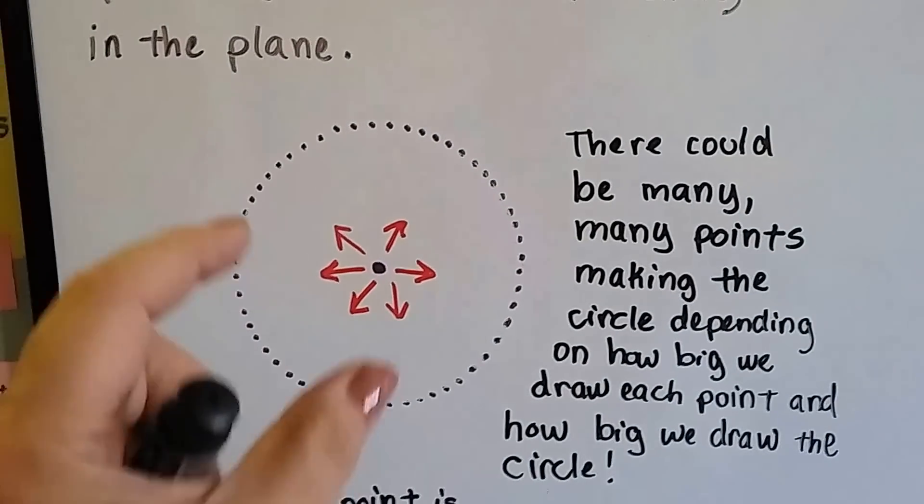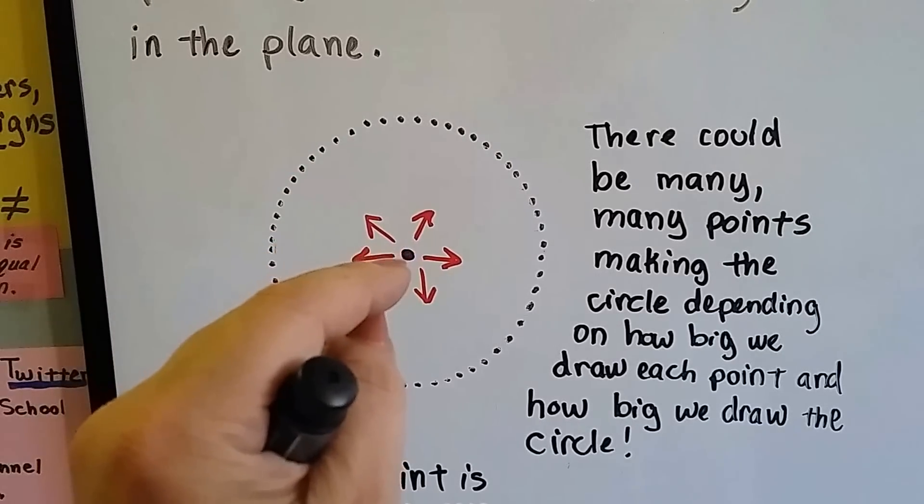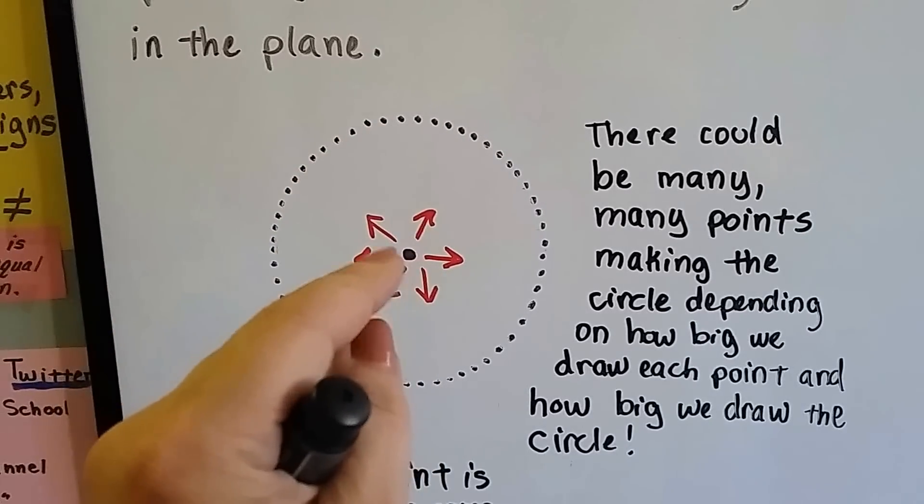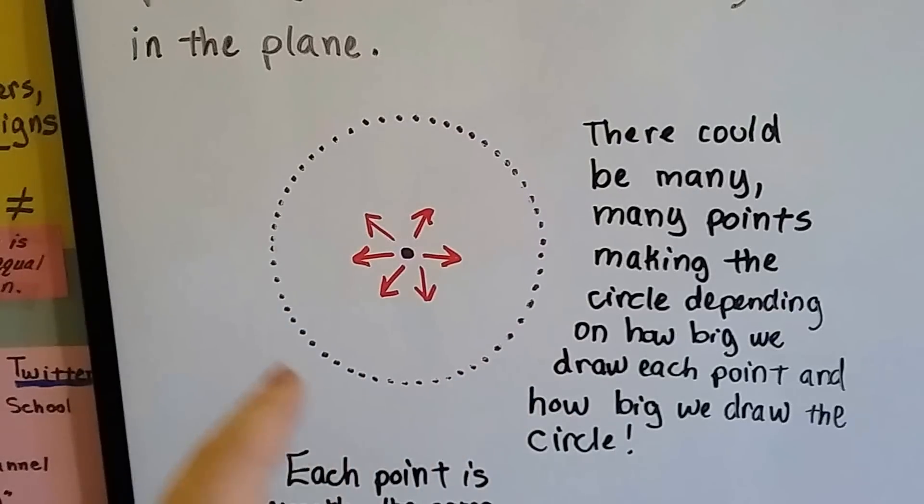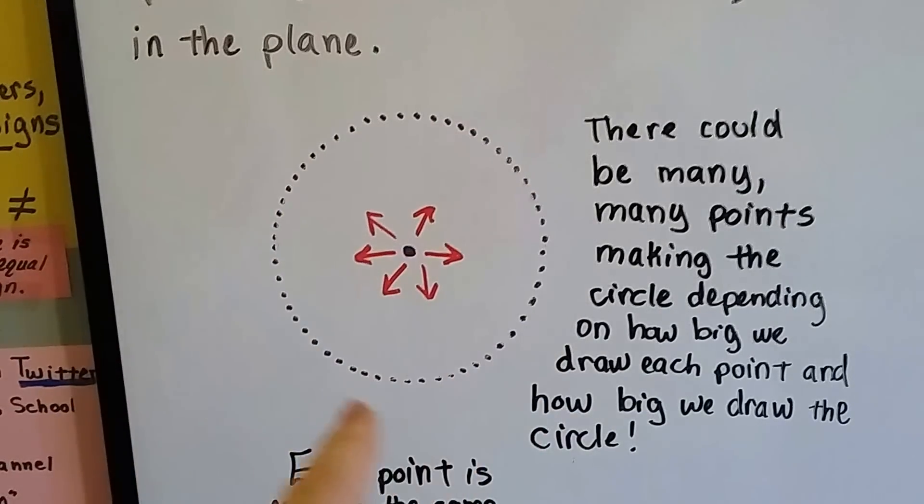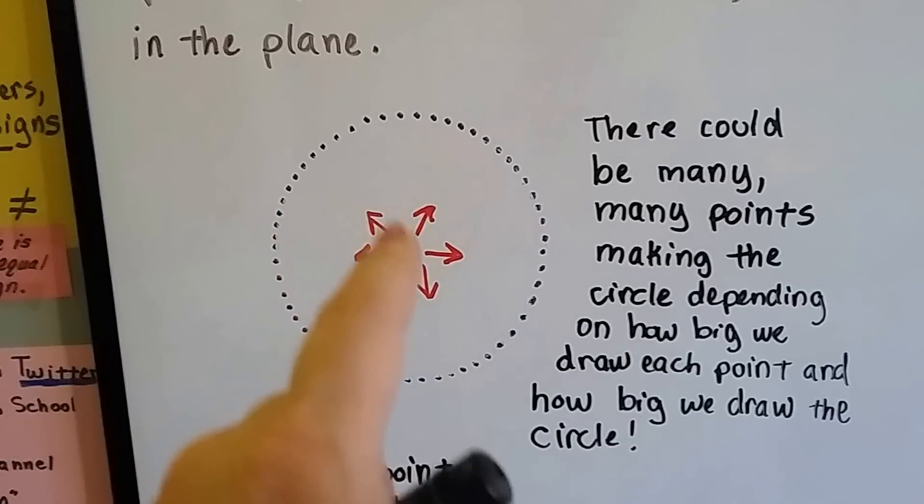But each one of these points is the same distance from the center as the next one. So think of a circle as millions of tiny little points that are the same distance from this center point.